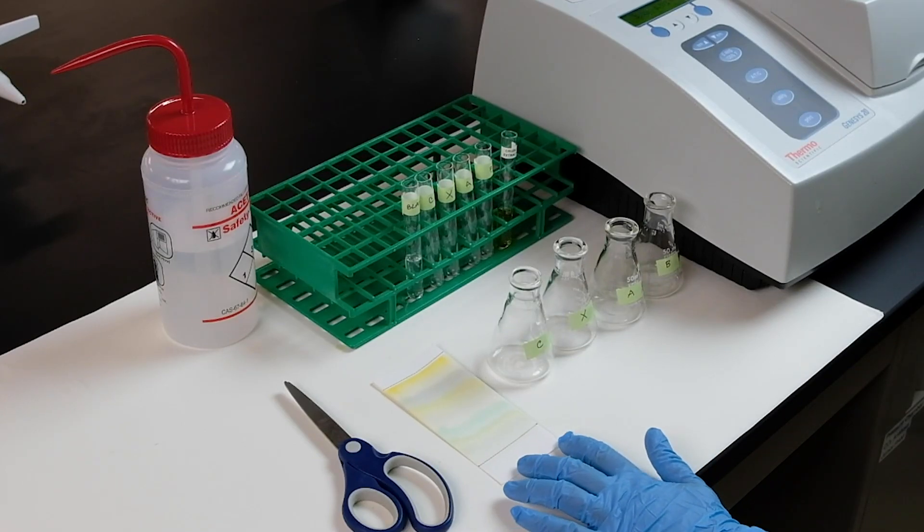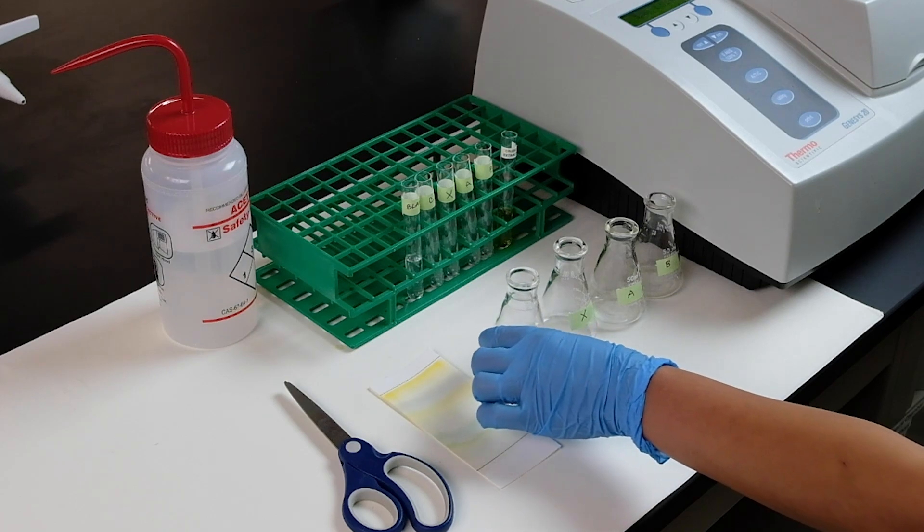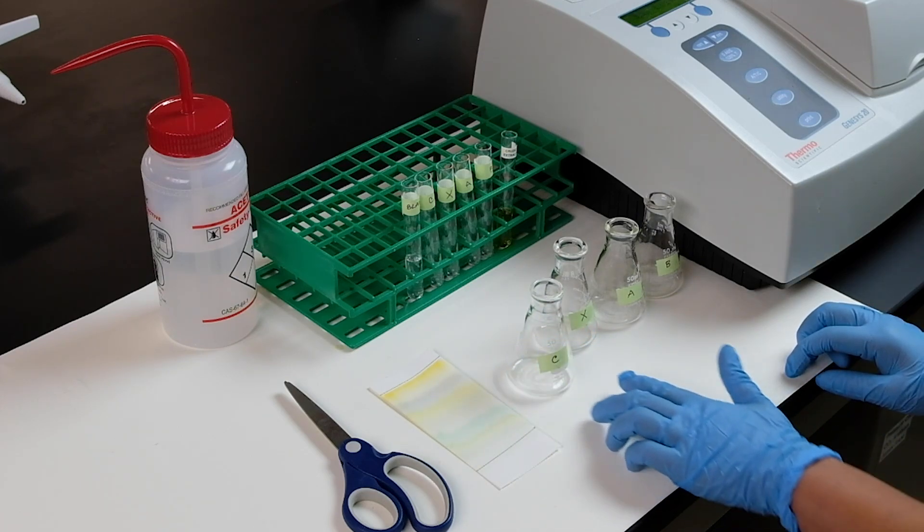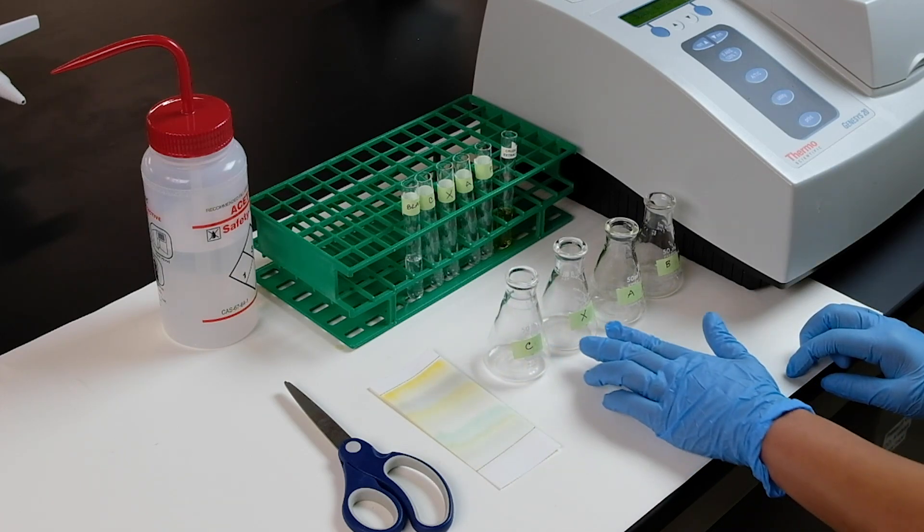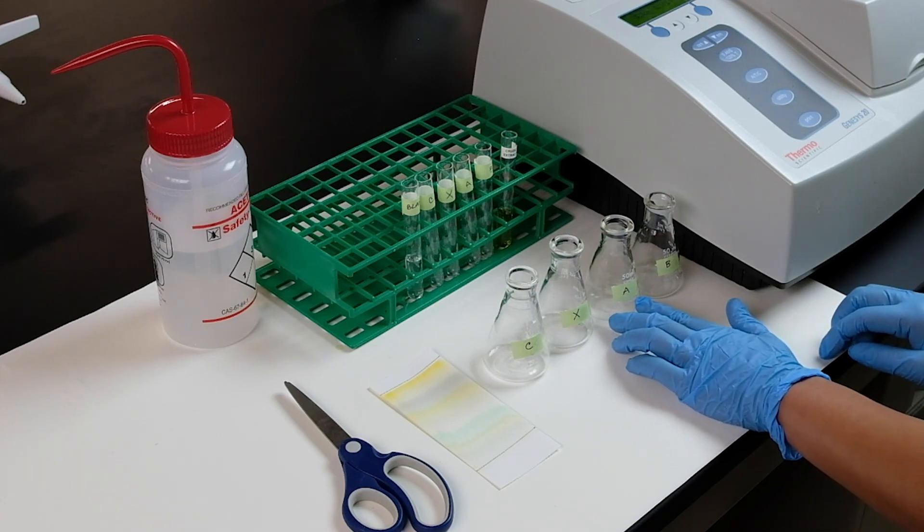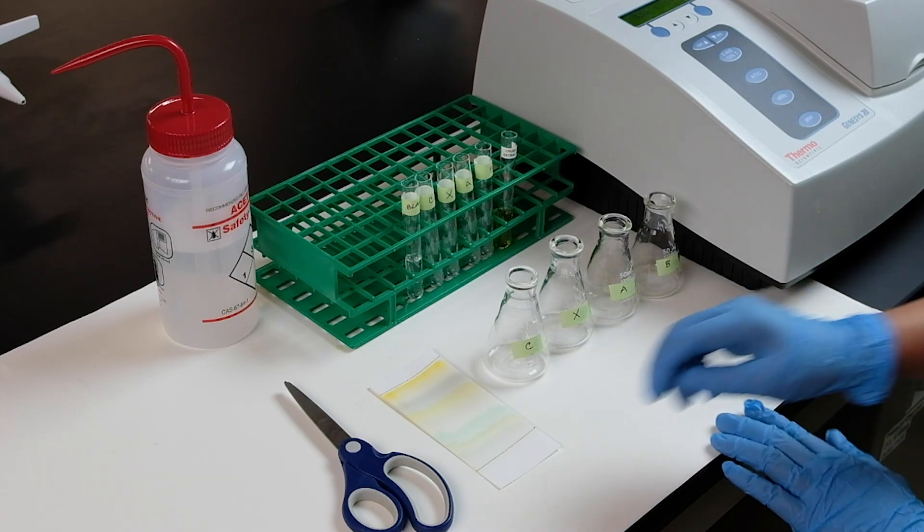Now, you cut each pigment and deposit them in each corresponding flask: C for carotene, X for xanthophyll, A for chlorophyll A, and B for chlorophyll B.